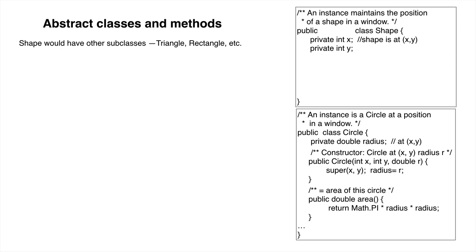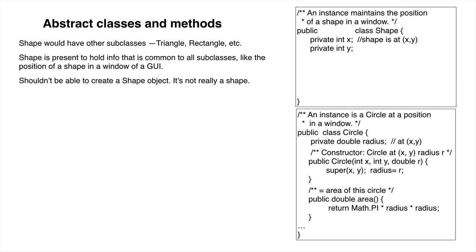Class Shape is there to hold information that is common to all subclasses, like the position of a shape in a GUI window. We don't want users to create instances of class Shape because an instance really isn't a shape. All it has is the position of shapes.